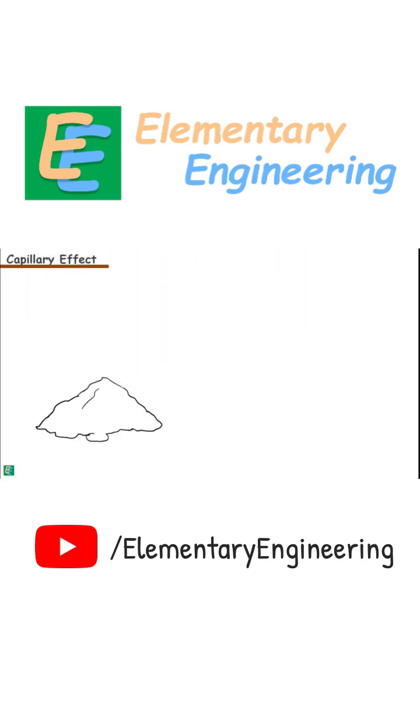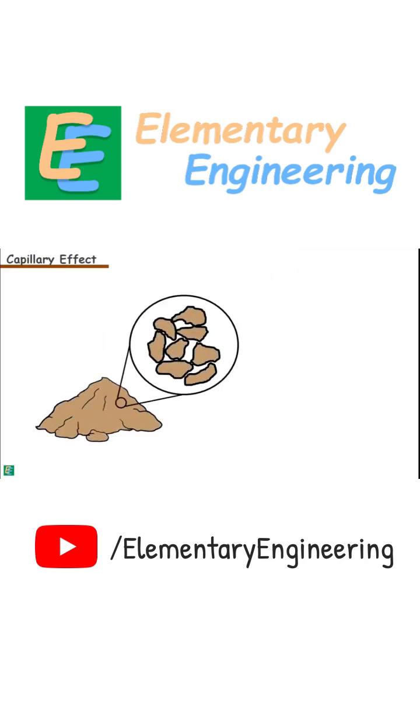To understand the capillary effect in soils, we can compare the voids present between the soil grains with very small diameter glass tubes called capillary tubes. These voids are interconnected and form a channel of tube-like structure which is comparable to the capillary tubes.